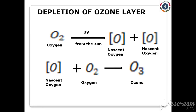The ozone layer is very important for the existence of life on Earth, as it absorbs most of the harmful radiation from the sun, preventing it from reaching the Earth. It is commonly called the ozone shield. This region intercepts high-energy ultraviolet radiations that can cause skin cancer in human beings, but it allows low-energy ultraviolet radiation to reach the Earth's surface.